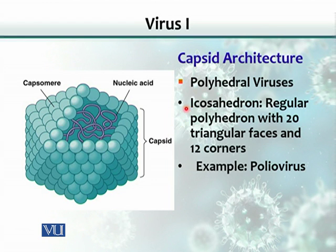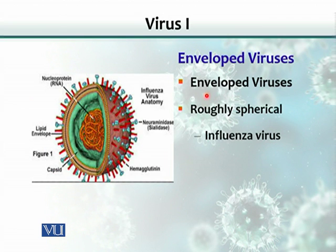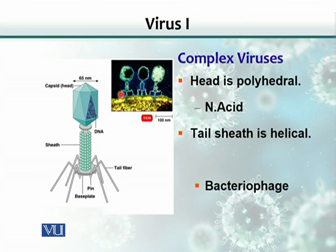Another category is polyhedral viruses. The capsomeres are arranged to form different triangles — about 20 different triangles and 12 corners — and this is called a polyhedral virus. Another type is an enveloped virus. Any virus — helical or icosahedral or polyhedral — could be enveloped or non-enveloped, naked or enveloped. Influenza virus is an example of an enveloped virus with helical symmetry. A combination of polyhedral and helical is what we call a complex virus; bacteriophages are a typical example.